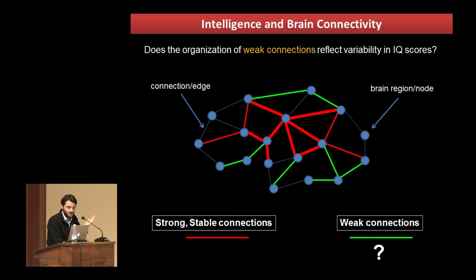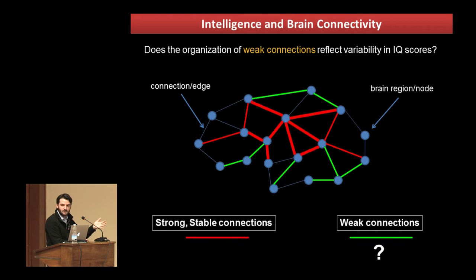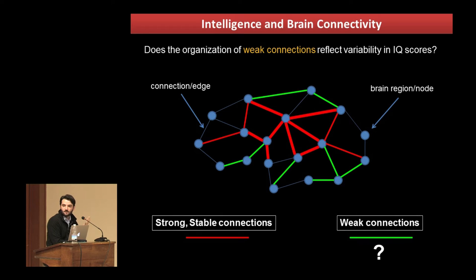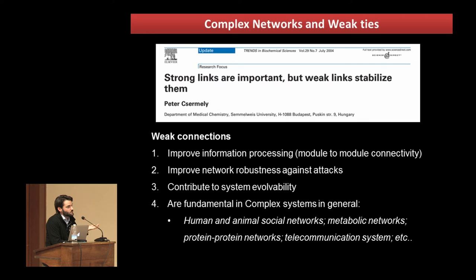The first paper I'm going to show is a controversial one. When you think about brain connectivity, at least 95% of the literature focuses on the strongest connections in the brain — the highly similar connectivity that is really reliable and always there. What we tried to explore was the opposite — the weak connections that are actually more flexible, more variable, can increase or decrease their intensity. Why study this? Because biology suggests they are crucial: they stabilize activity, contribute to system evolvability, and improve resilience against attacks. They are fundamental in all types of complex systems, not just the human brain.